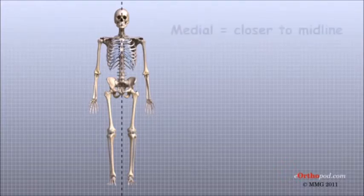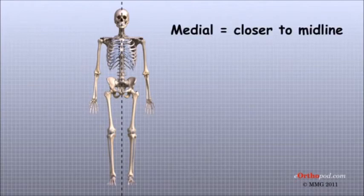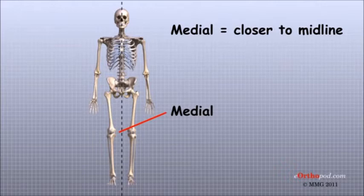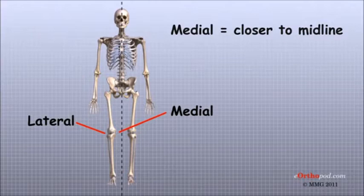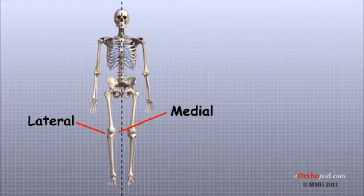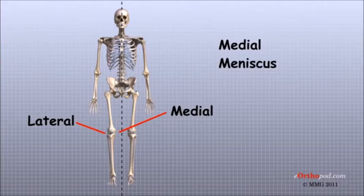For example, medial means closer to the midline, so the medial side of the knee is the side that is closest to the other knee. The lateral side of the knee is the side that is away from the other knee. Structures on the medial side usually have medial as part of their name, such as the medial meniscus.